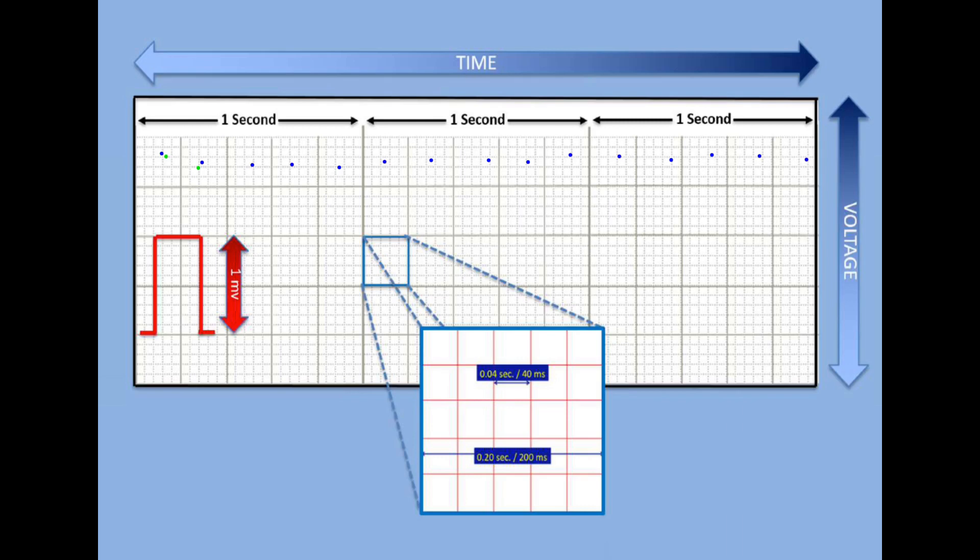Remember I told you that two large boxes in height or 10 small boxes is one millivolt. The voltage criteria isn't super important, maybe a little more when interpreting 12-lead EKGs, but when it comes to rhythm interpretation, it's a lot about these time components. Just to review one more time, every small box is 0.04 seconds or 40 milliseconds, and every large box is 0.20 seconds or 200 milliseconds.